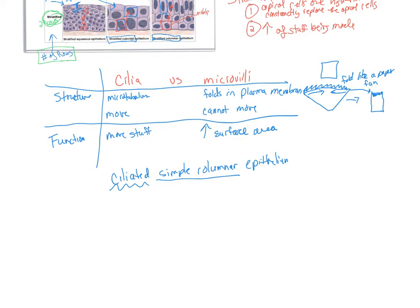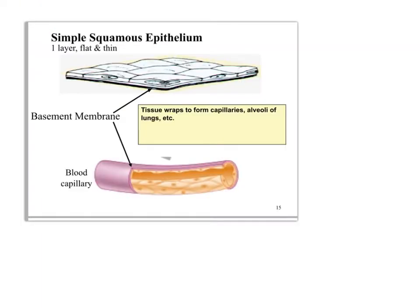Here we're looking at simple squamous epithelium. 'Simple' tells you one row of cells; 'squamous' tells you that the cells are thin and flat. So we have one row of thin flat cells. Where do you find them? In places where you need the tissue to be thin for diffusion and osmosis — capillaries, alveoli of the lungs, those kinds of areas. An example shown here is a blood capillary.